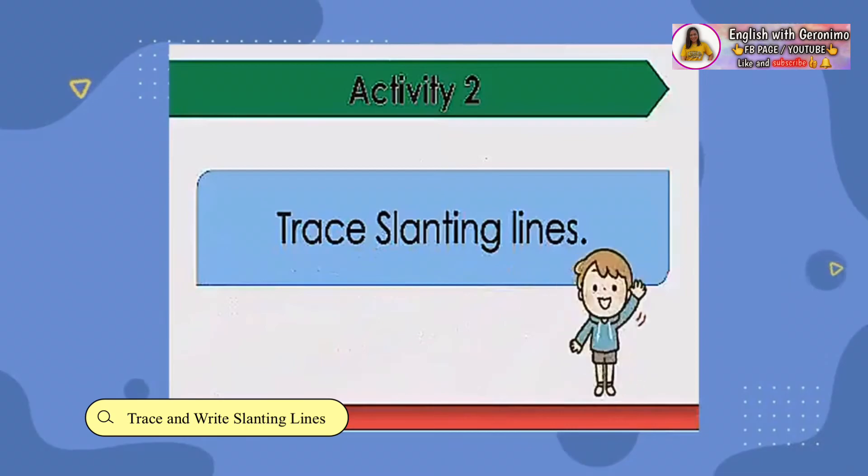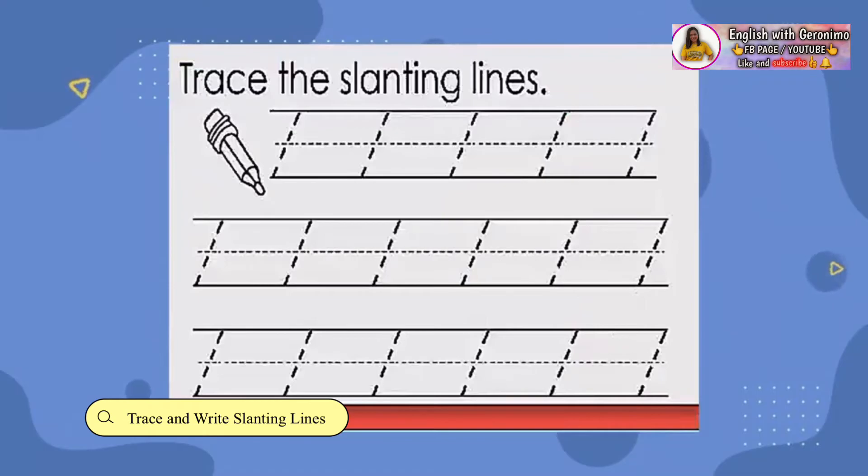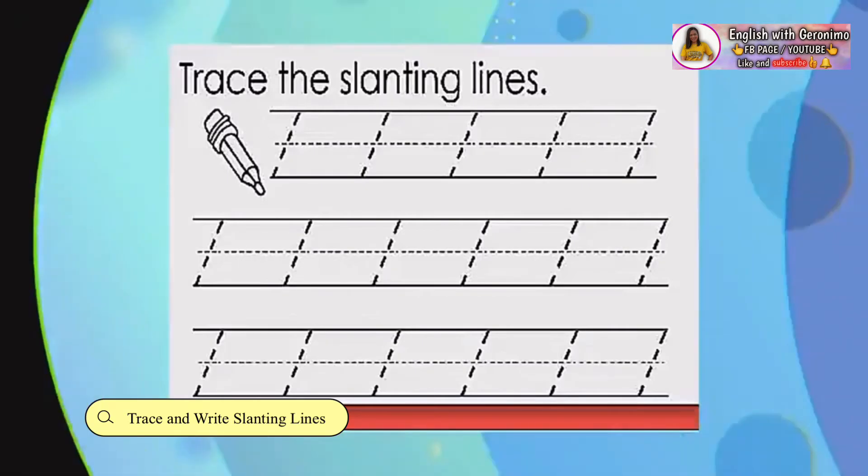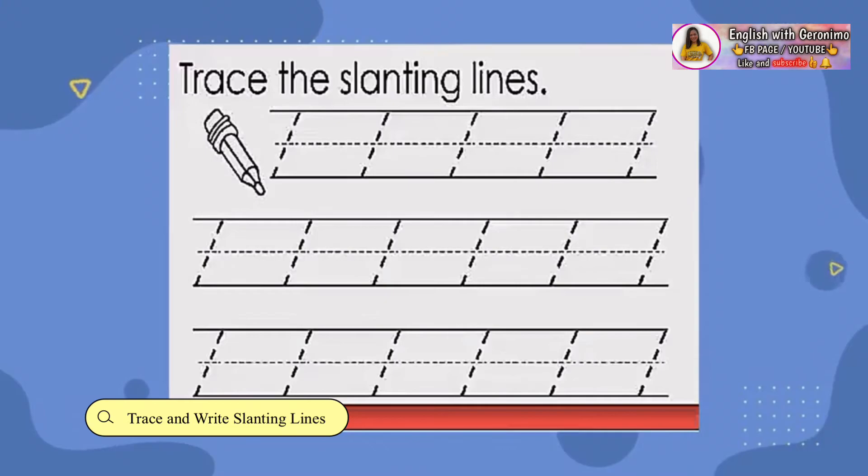Let's proceed to our activity 2. Trace slanting lines. We start from the top down to the bottom in a right-diagonal way. Trace the line slowly but surely. Always remember to use your pencil correctly.